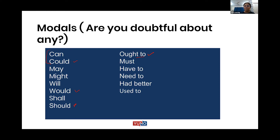Can and could can also be used for other things. If I have to make an offer to someone — 'Can I help you?' or 'Can I do something for you?' — can has been used. When we request people: 'Can you help me, please?' or 'Can you do this for me?' — this is a casual way.